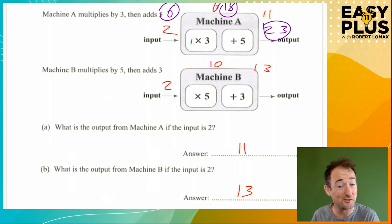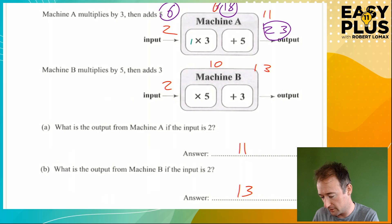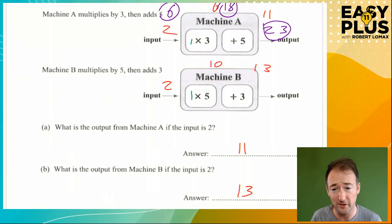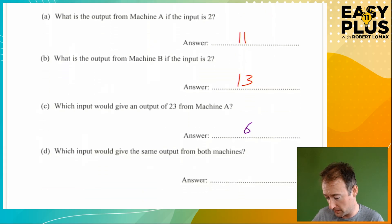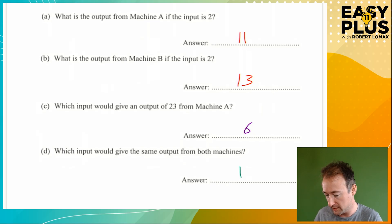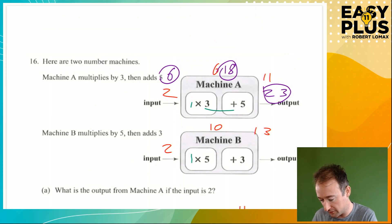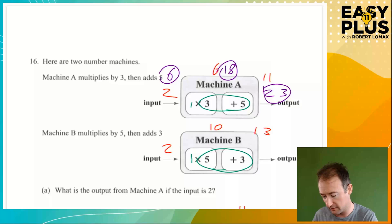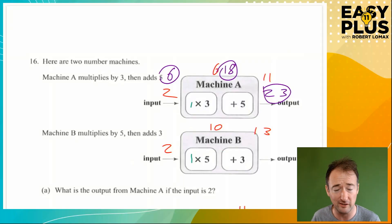1 times 3 plus 5 gives us 8. And if we have 1 times 5 plus 3, that also gives us 8. So going back to the question: which input would give the same output from both machines? It would be simply 1. We can see that just by looking at 3 and 5 and 5 and 3 — thinking these make the same things — so how can we mess with those numbers as little as possible? Timesing by 1 does that.